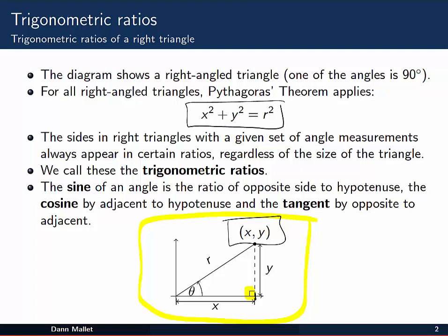Now any such x and y combination will generate an angle which we might like to denote theta. The sides in right triangles, with a given set of angle measurements, always appear in certain ratios. So the ratio of y to x, given an angle of theta, will always be the same ratio, regardless of the size of the triangle. For example if it was this big, or perhaps this big. We call the ratios the trigonometric ratios.